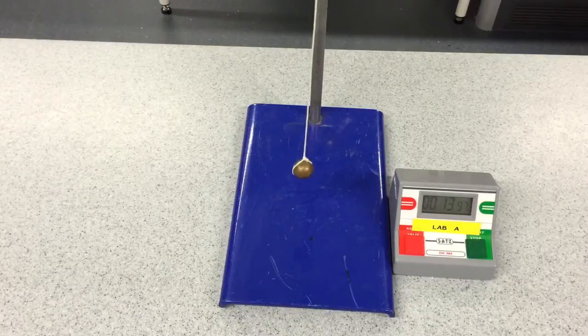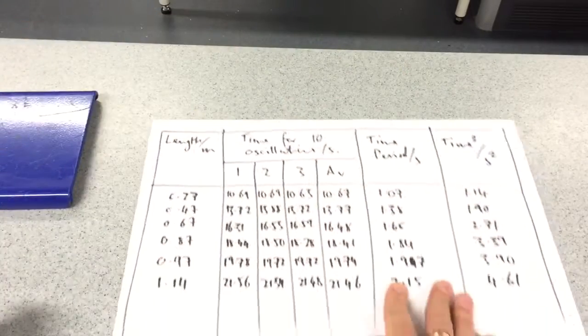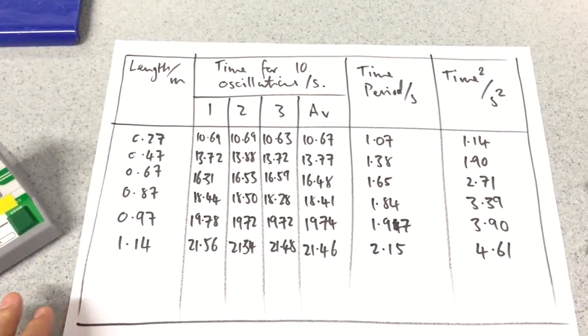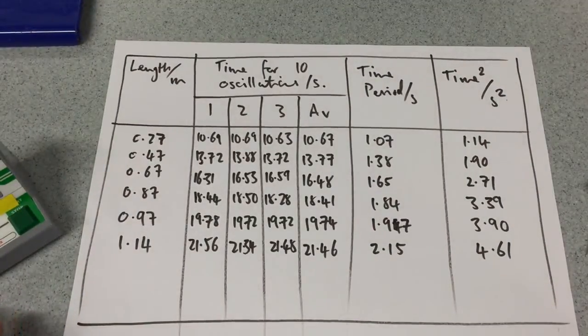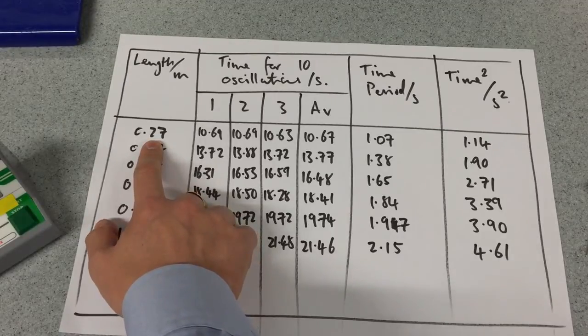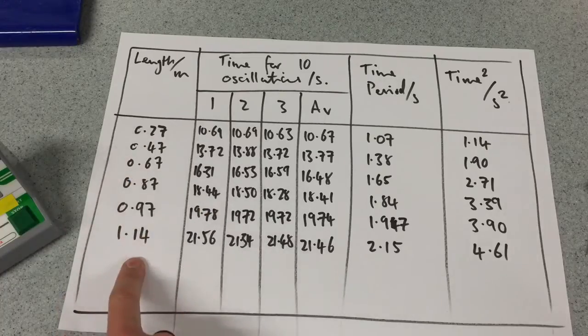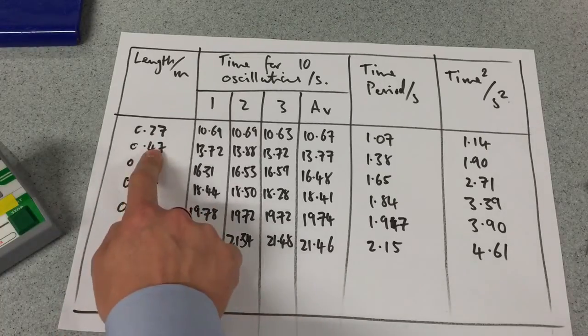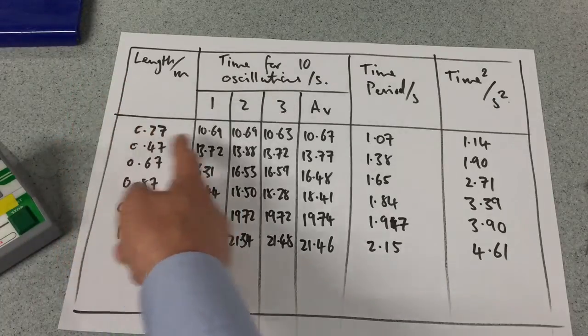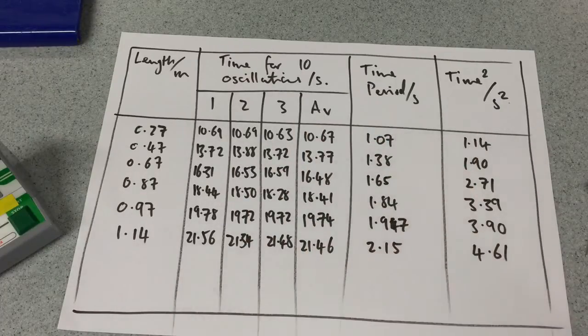And here are the results we have. There we are. So I've gone for quite a short length initially. Though I said we ought to go for a long length, it's quite hard to do it in the classroom. So I went from short length. I did go quite long as well, and everywhere in between, hopefully. Even it looks like an odd number. That's just because how I wrapped it around how I was securing the top. We've got an average. We've got a tenth of that, which is the time period. And then I've got the time period squared.